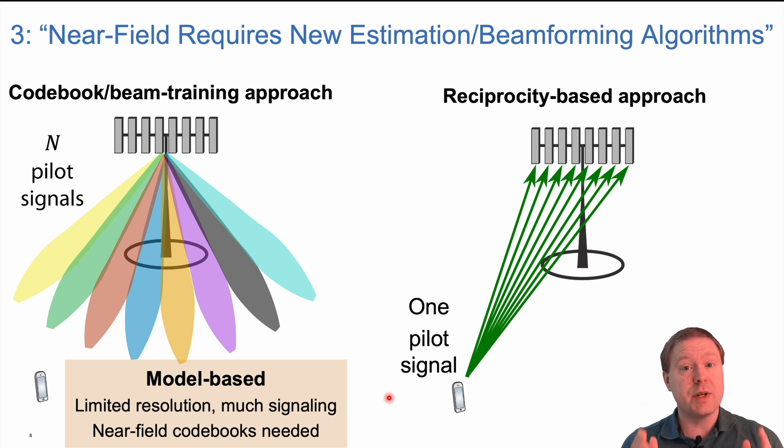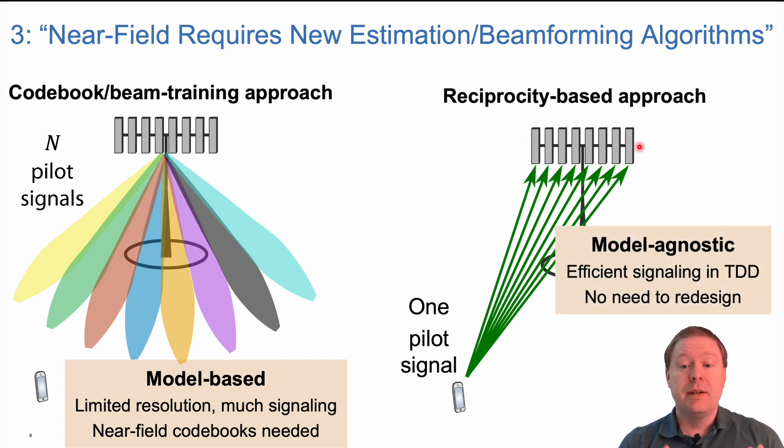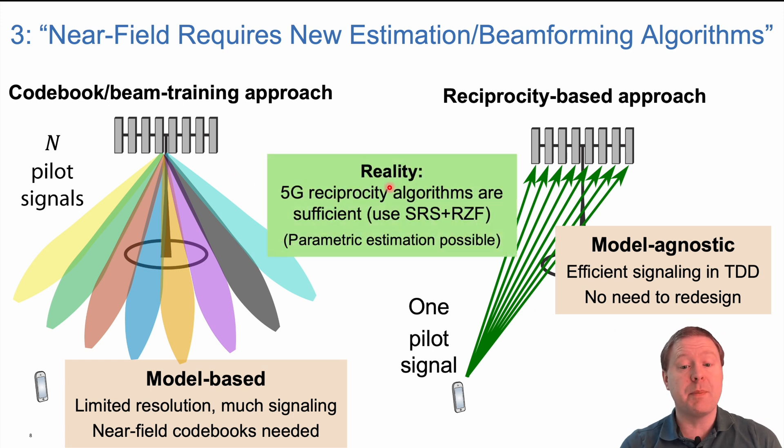However, in 5G we can also take a reciprocity-based approach to channel estimation. Then we let the user device send the pilot and we estimate the channel on all the antennas at the base station at the same time. This is model-agnostic because we just estimate whatever channel we're having. It's very efficient in TDD spectrum because we can use one pilot signal and estimate the channel using arbitrarily many base station antennas. There is no need to redesign this if we're operating in the near field because we never use any models. We just estimate whatever channel coefficients we are getting.